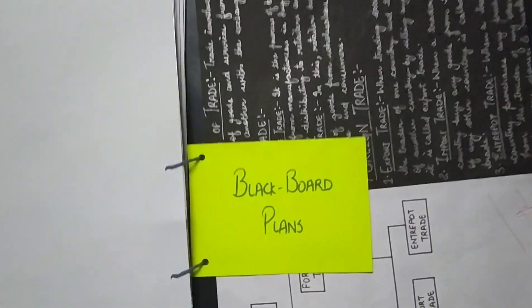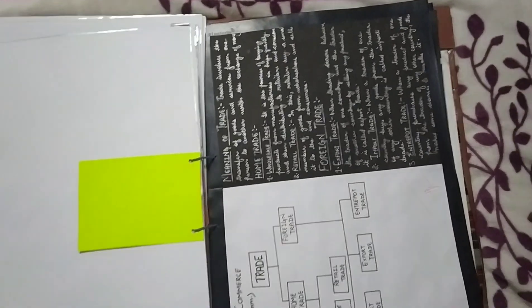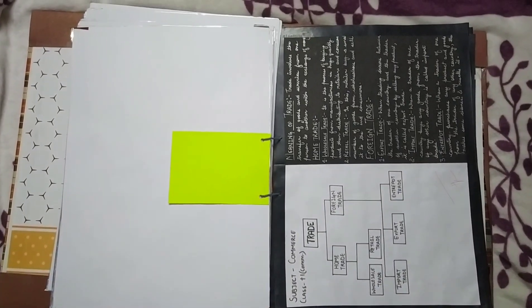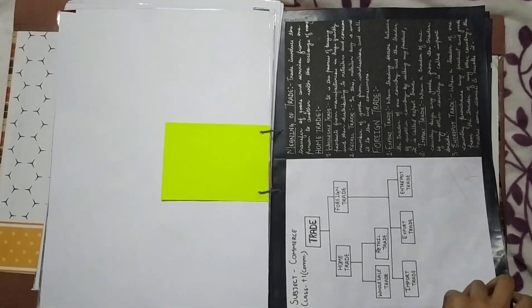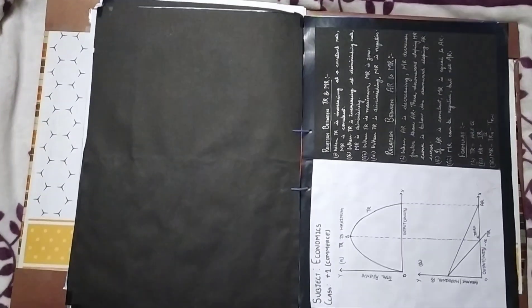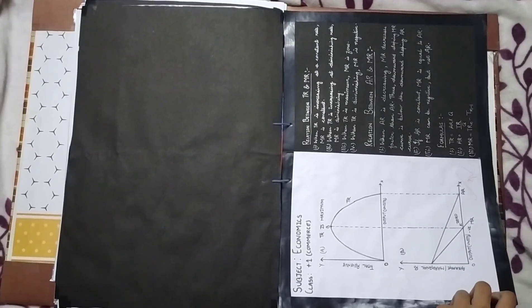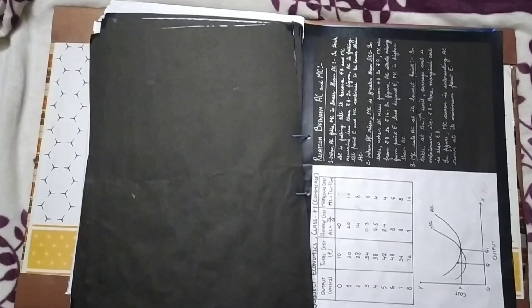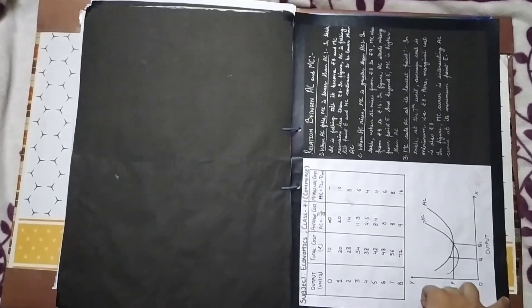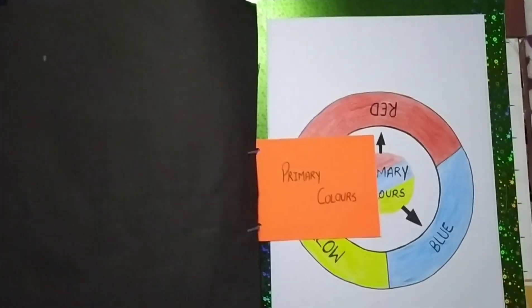Next, 4 sheets are about blackboard plans. In B.Ed., blackboard plans are an important part, and I have made these related to my subjects only. The first one is about trade — types of trade — and the next one is about aids to trade. In economics, I have made an AR, MR, and TR curve, and then an AC and MC curve and their relationship. So these were the 4 blackboard plans, which are also part of this file.